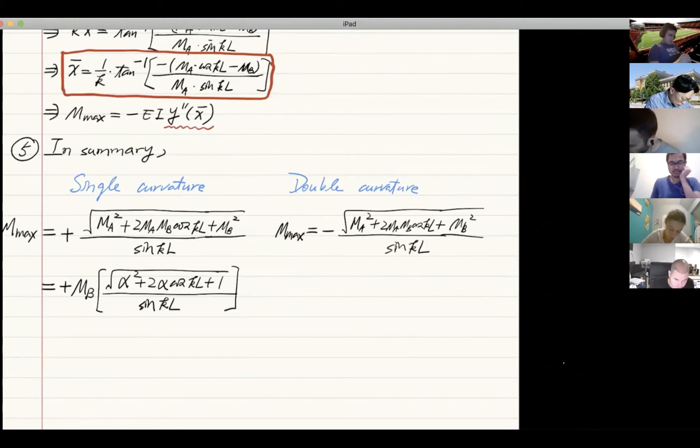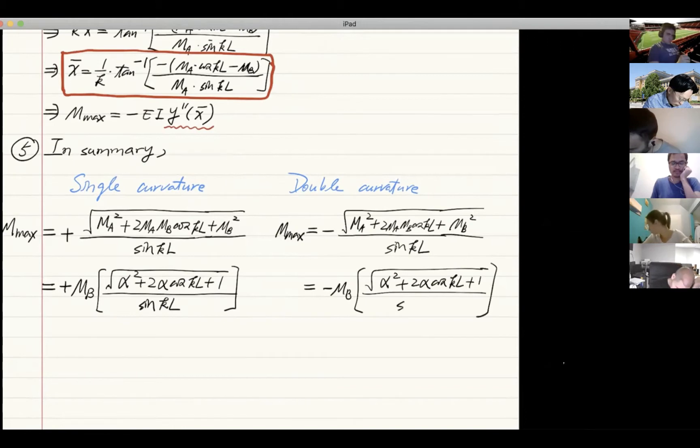This will lead to negative MB times the whole thing: alpha square plus 2 alpha cosine KL plus 1, divided by sine KL.